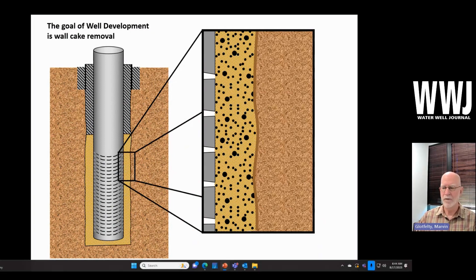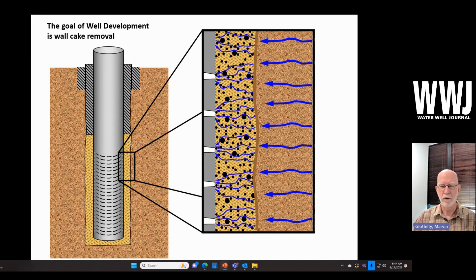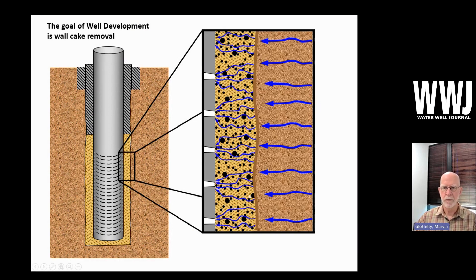So first of all, the fundamental purpose of well development is when we have groundwater entering the well while we're pumping, this wall cake, this brown line here, is what will impede that.